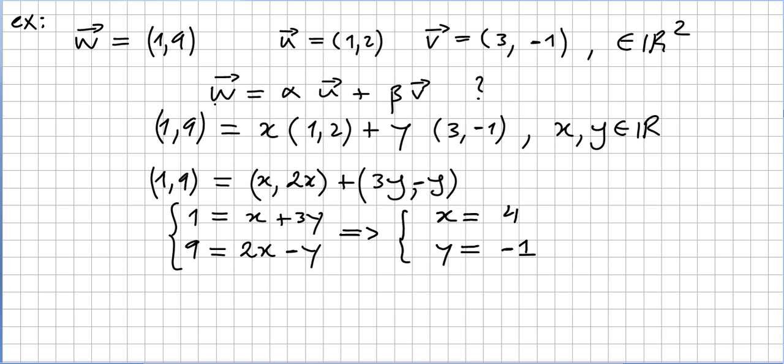So, yes, this is true. W is a linear combination of these two vectors. We just need, if we multiply vector u by 4 and if we multiply vector v by minus 1, we get vector w. So vector w is a linear combination of vector u and vector v.